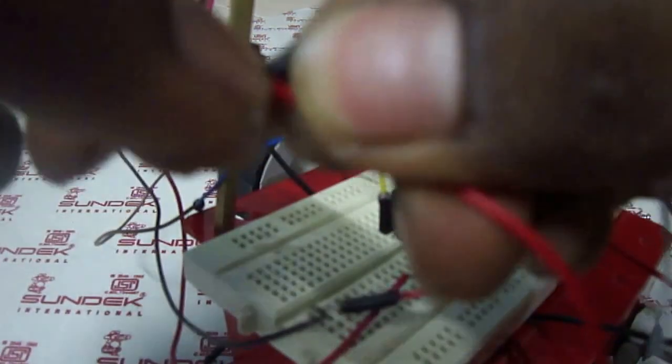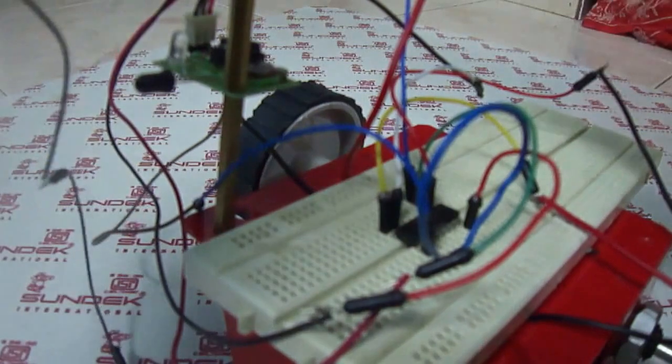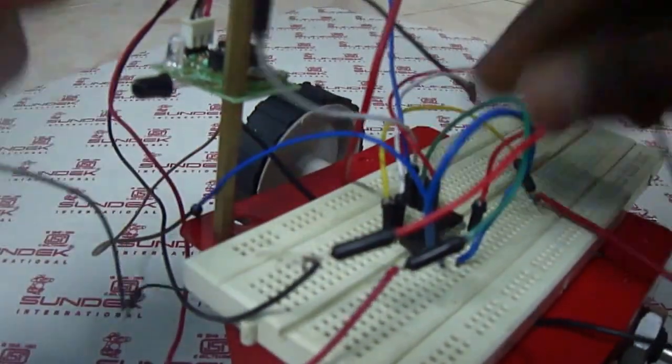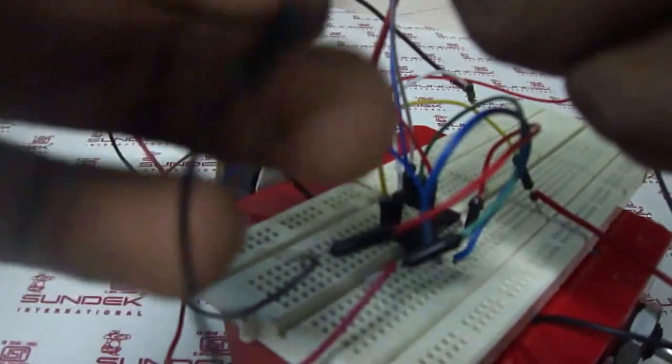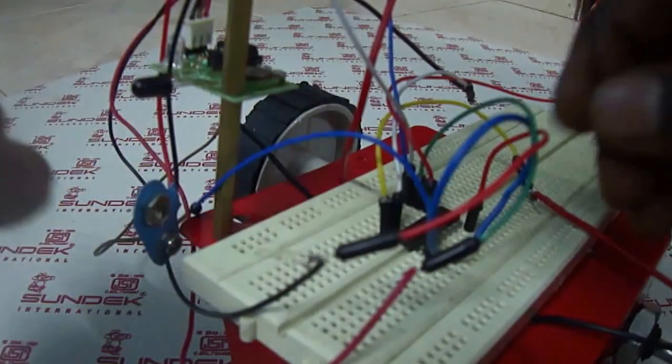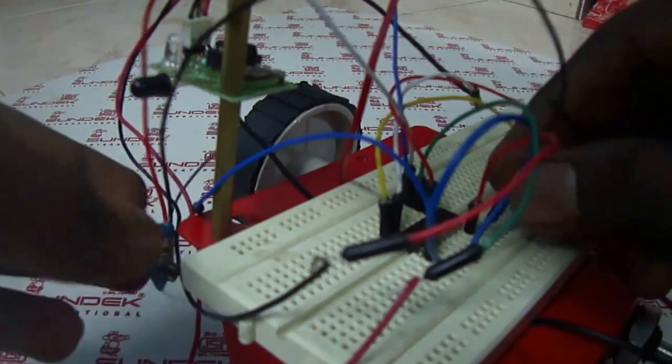And then I am going to connect the battery snap, one end of the battery snap to the positive, and the other end of the battery snap to the negative, which is also known as ground.